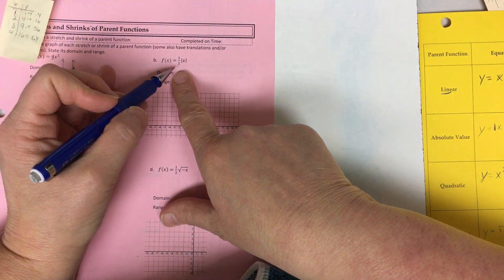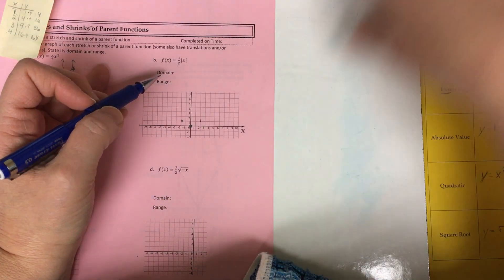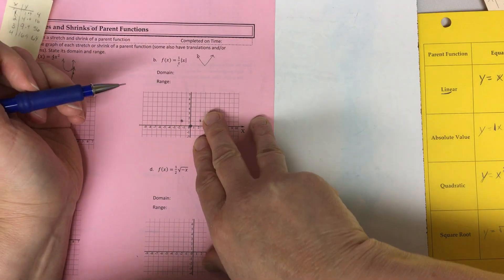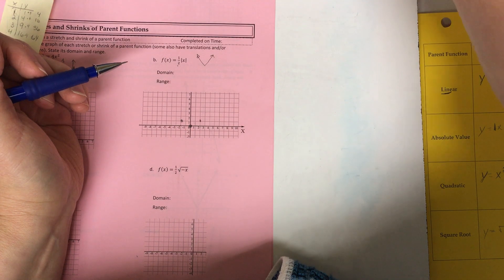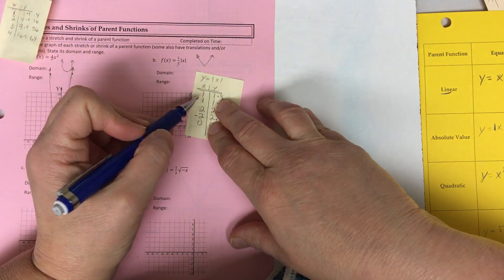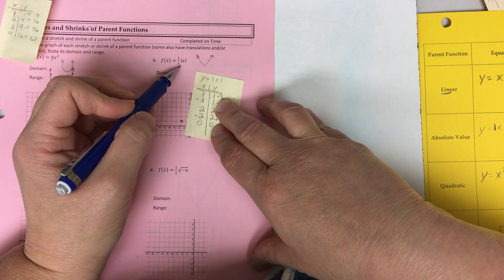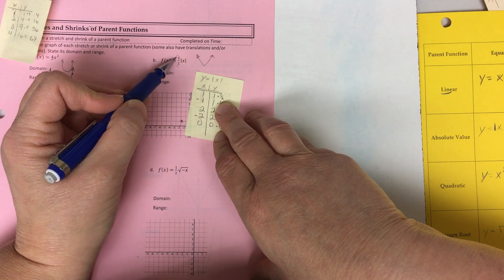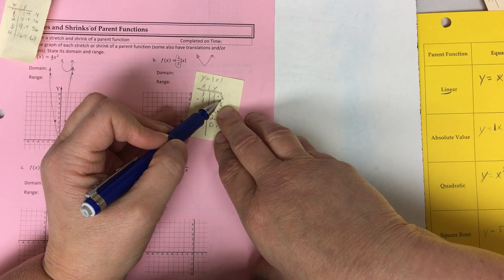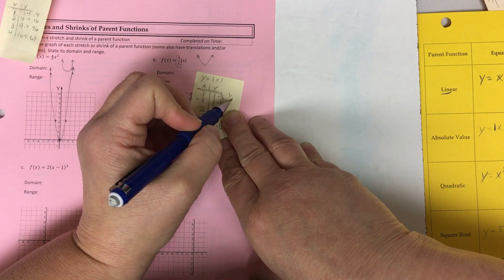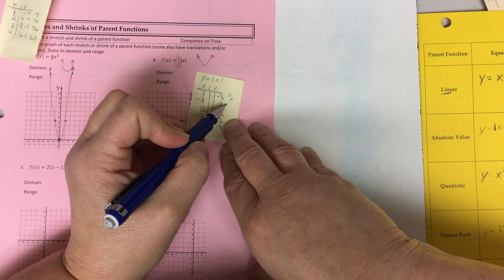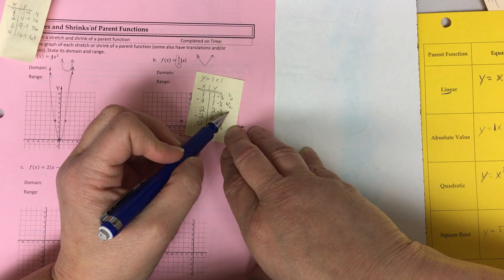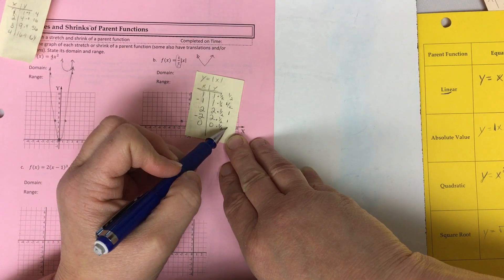I have my absolute value function. So my parent function would look like that when we graph it. So I've already done a t-chart. If I put in one I'm gonna get out one. Absolute value remembers the distance. So one, one, now I'm gonna use my stretch or shrink factor which is one half. So I'm gonna times by one half. Well one times one half is one half. So this would be one half as well. Two times one half is one and that would be one and zero would be zero.